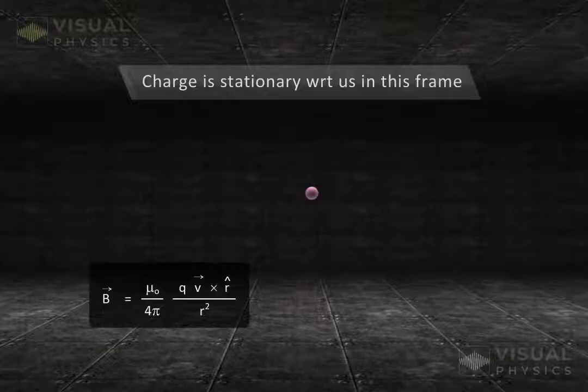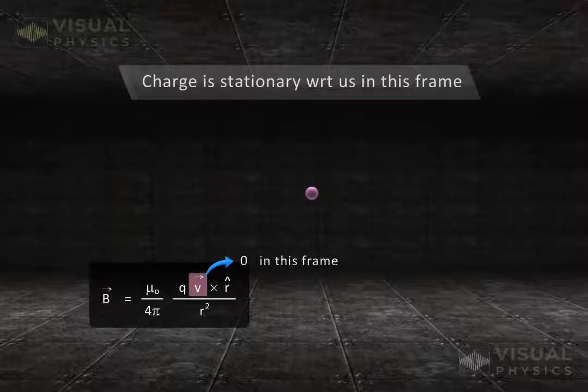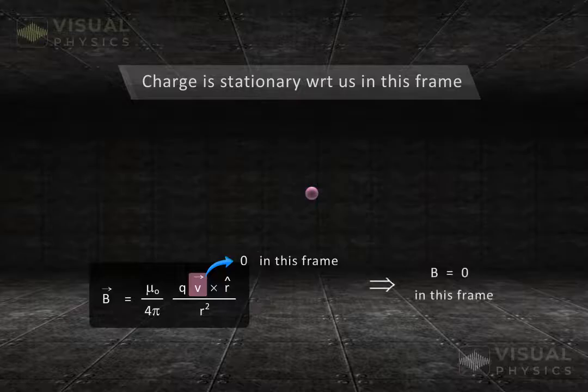Since this equation involves the velocity of charge, and in this frame of reference, the charge is stationary, so in this frame there will be no magnetic field due to this charge.